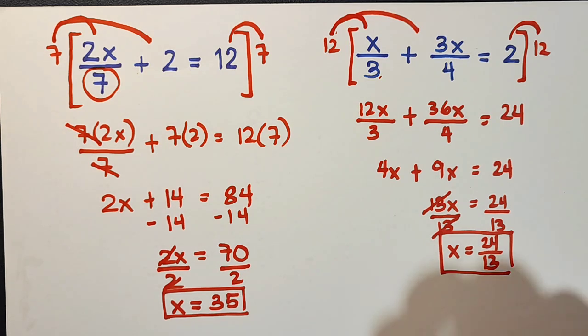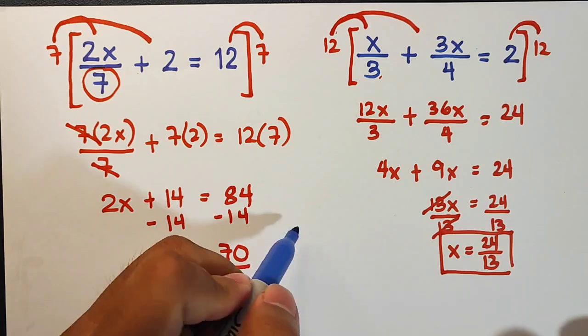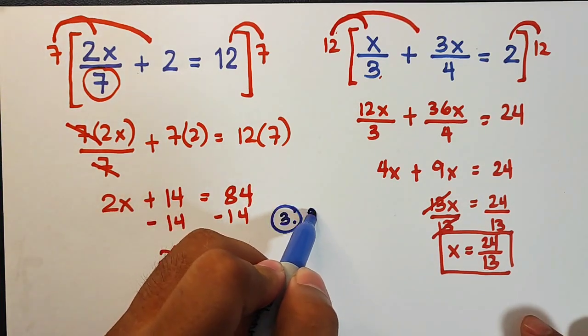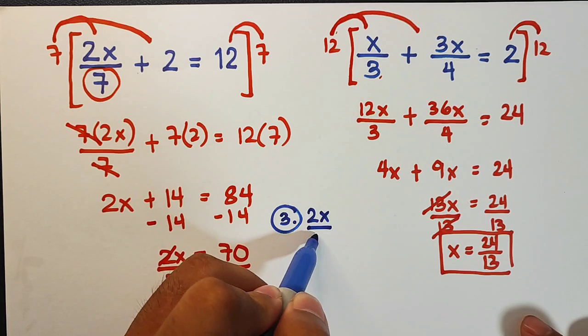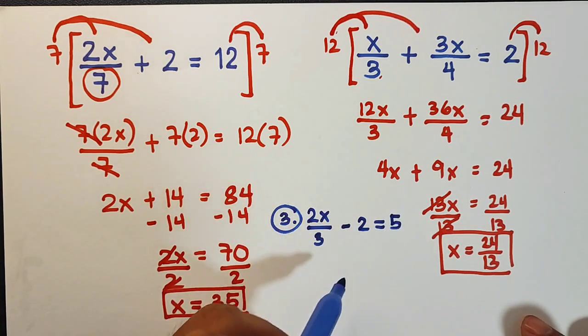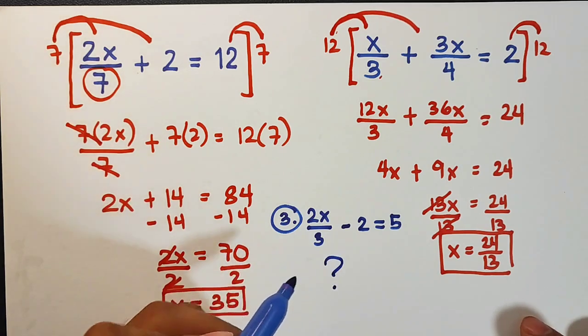This is the problem for number three—I want you to answer this one on your own. I will give you: 2x over 3 minus 2 is equal to 5. So what do you think is the correct answer here?